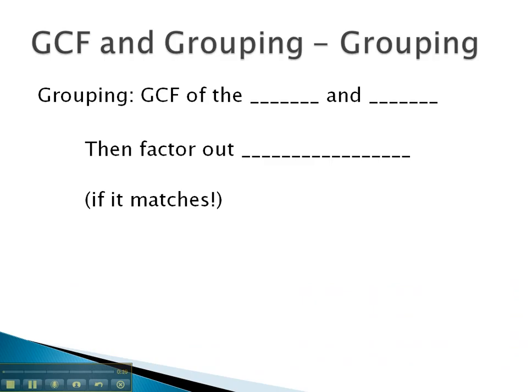The way grouping works is we take the greatest common factor of the left and right sides separately. Then, we factor out the binomial GCF. If it matches, our hope is that it will match when we factor the GCF out of the left and right side.